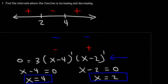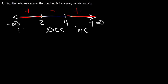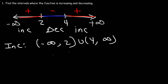Now we can determine the intervals where the function is increasing and decreasing. The function is decreasing where the first derivative is negative and increasing where it's positive. So it's decreasing between 2 and 4, and increasing between 4 and infinity and between negative infinity and 2. The function is increasing from negative infinity to 2, union 4 to infinity, and it's decreasing only between 2 and 4.